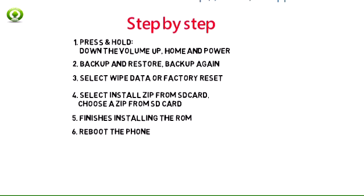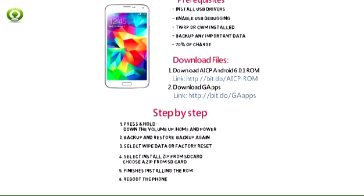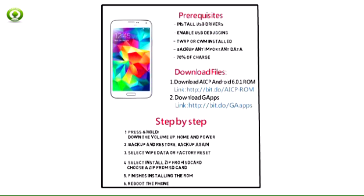6. When done, go back to the Main Recovery menu and select Reboot System Now to reboot the phone to the latest firmware. Enjoy Android 6.0.1 Marshmallow features on your Samsung Galaxy S5, and don't forget to share your experience with us.